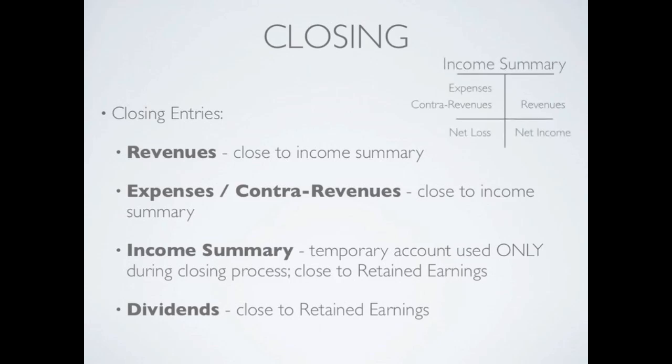There's an illustration of the income summary T-account. Notice we closed our revenues, closed our expenses, and closed our contra revenues to the income summary. Remember, if you have a credit balance in the income summary it's net income; if you have a debit balance it's net loss. You will not have both — you'll have one or the other: a net income credit balance or a net loss debit balance.